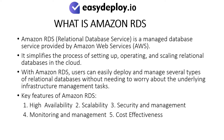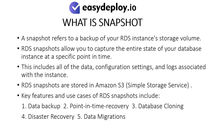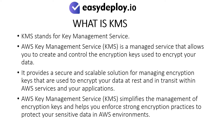What is Snapshot? A snapshot refers to a backup of your RDS instance's storage volume. RDS snapshots allow you to capture the entire state of your database instance at a specific point in time. This includes all of the data, configuration settings, and logs associated with the instance. RDS snapshots are stored in Amazon S3. Key features and use cases include: Data backup, Point-in-time recovery, Database cloning, Disaster recovery, and Data migrations.